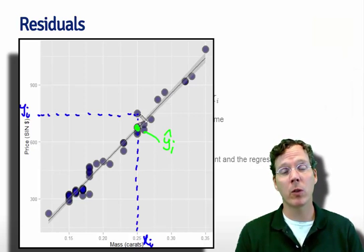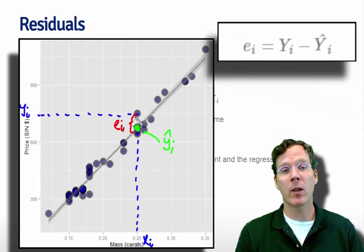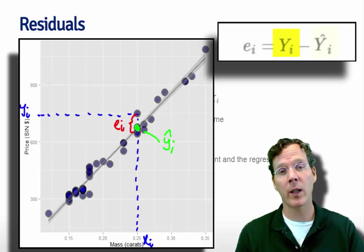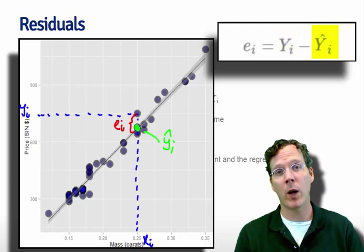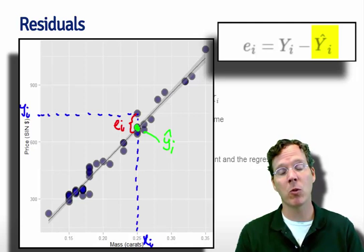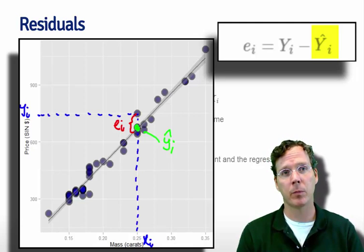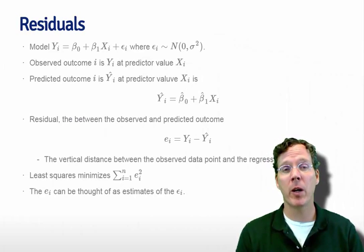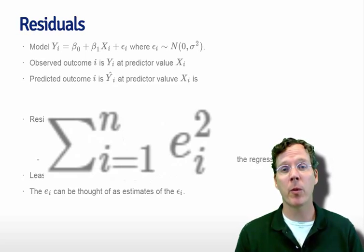Our residual is nothing other than the vertical distance between the observed data point—the observed outcome Yi—and the fitted value Ŷi. So ei equals Yi minus Ŷi. Remember, our least squares criteria tried to minimize the sum of the squared vertical distances. So in essence, it was minimizing the sum of the squared residuals, Σei².